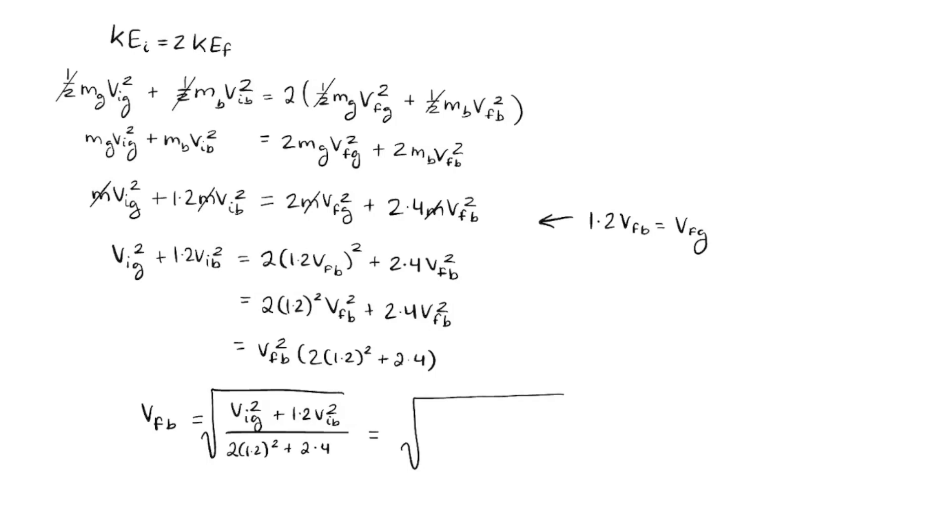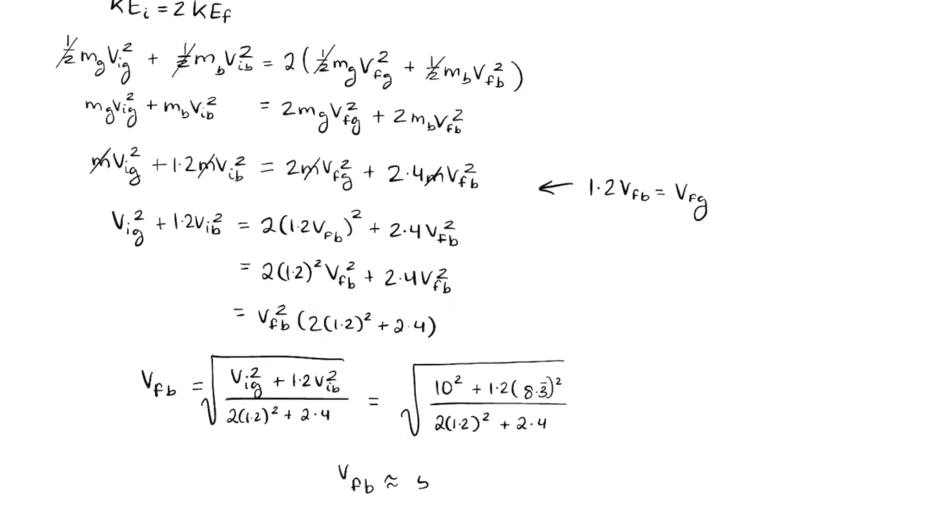Now we just plug in our values. 10 squared plus 1.2 times 8.383 squared over 2 times 1.2 squared plus 2.4, which gives us that velocity final of b is approximately 5.893 meters per second.